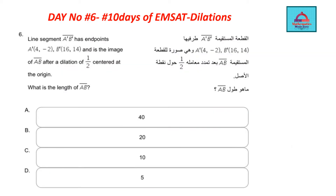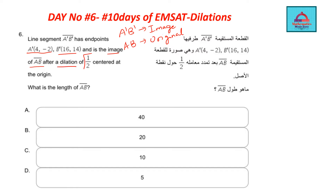The question for today: line segment A'B' has endpoints A'(4, -2) and B'(16, 14). A'B' is the image of AB — so A'B' is the image and AB is the original. A dilation factor of 1/2 is given, centered at the origin. What is the length of AB? We need to find the original coordinates of A and B and then its length.